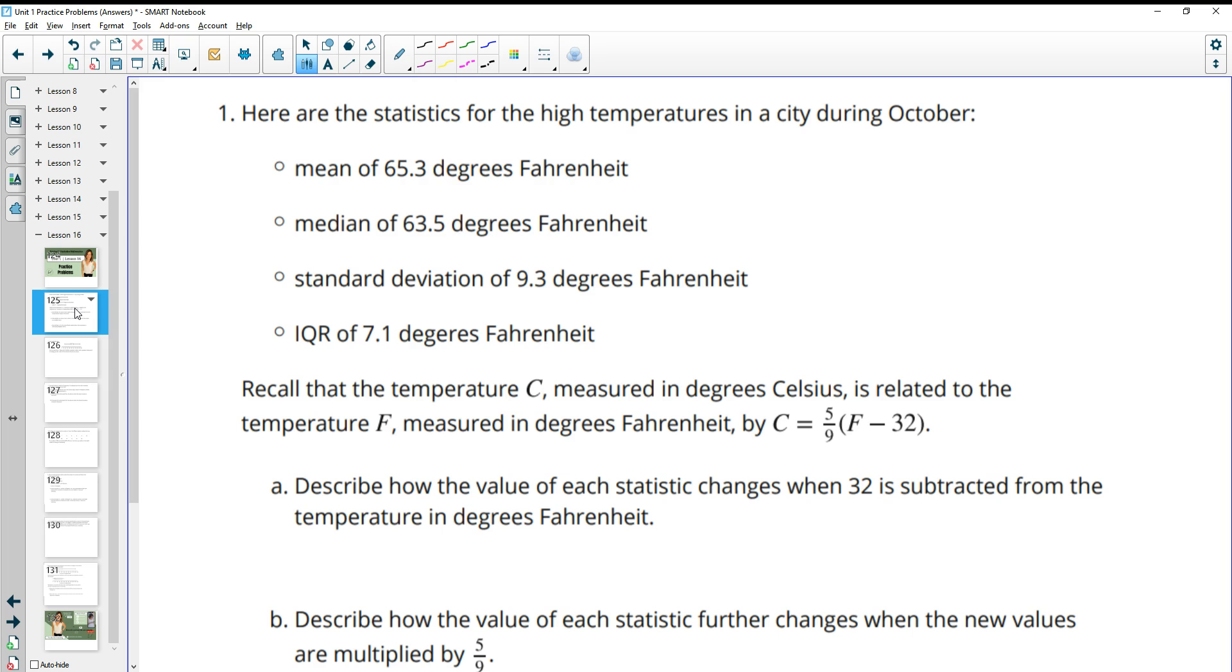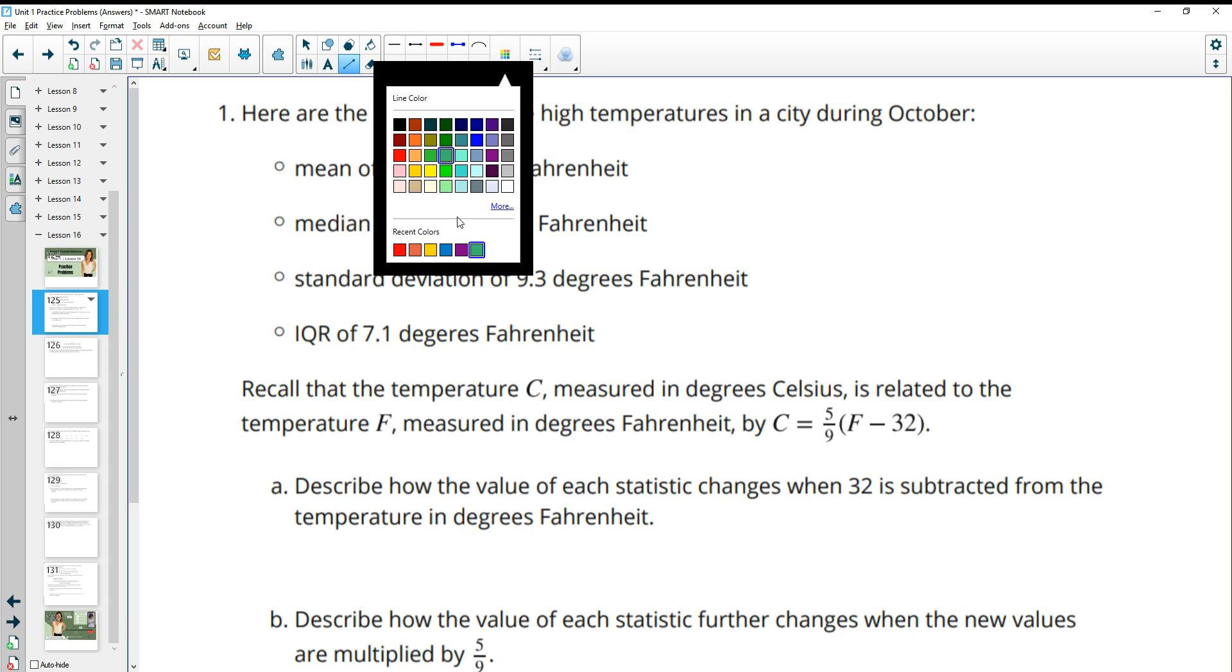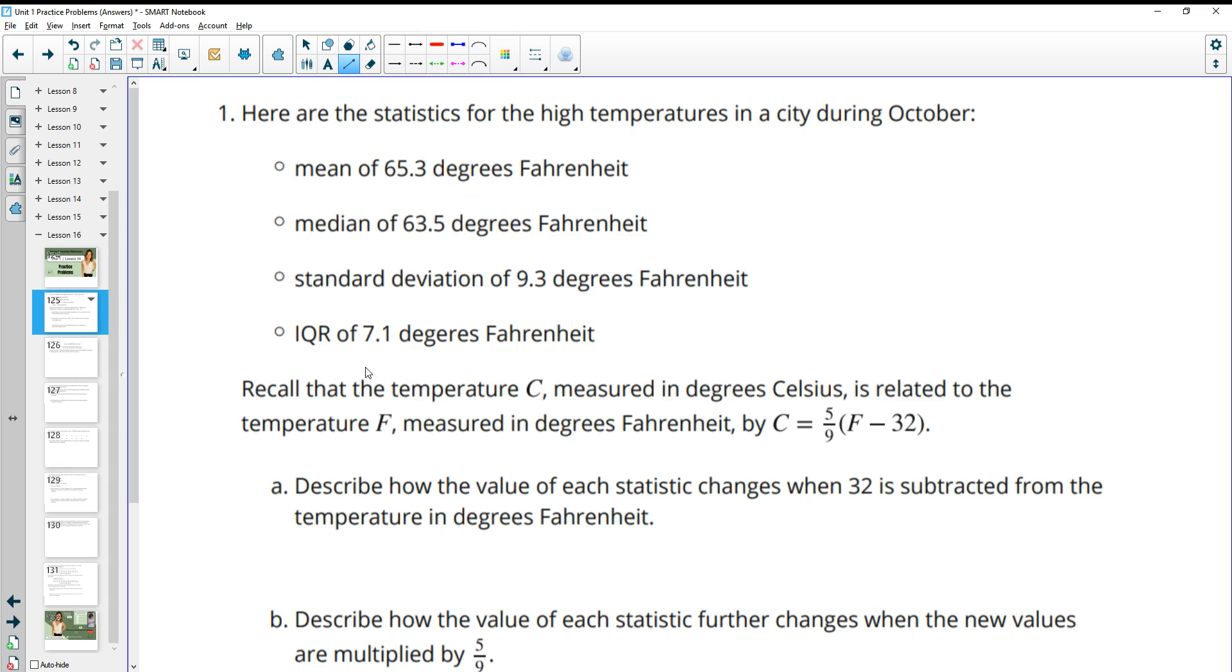Number one gives us statistics for the high temperatures in a city during October, and each of these statistics are given to us in Fahrenheit. So we see the mean, median, standard deviation, and interquartile range. Then it tells us to recall that the temperature C, which is Celsius, is related to the Fahrenheit temperature by this equation, where we get the Celsius measure by taking 5 ninths times the Fahrenheit temperature minus 32.